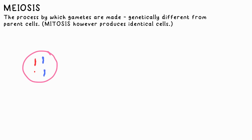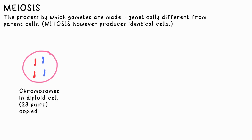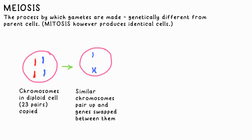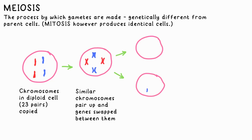Chromosomes in a diploid cell — that is 23 pairs for humans — are copied. Similar chromosomes then pair up, and genes are swapped between them.